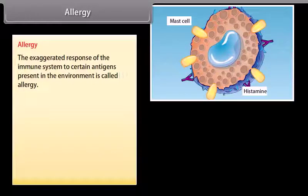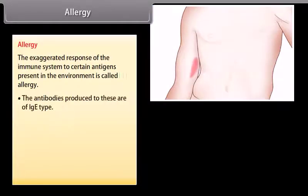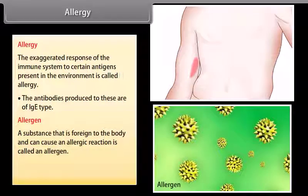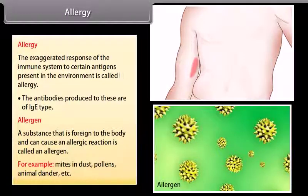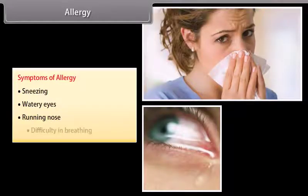Allergy is the exaggerated response of the immune system to certain antigens present in the environment. The antibodies produced in allergy are of the IgE type. A substance that is foreign to the body and can cause an allergic reaction is called an allergen — for example, mites in dust, pollens, animal dander, etc. Symptoms of allergy include sneezing, watery eyes, running nose, and difficulty in breathing.